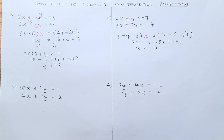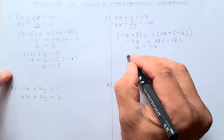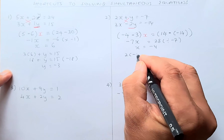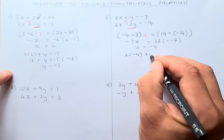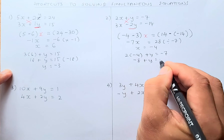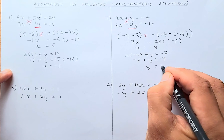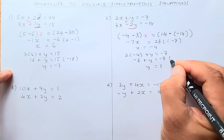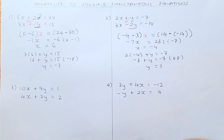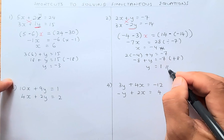And then you're going to solve it: x equals negative 4 because you divide by negative 7 on both sides. Now of course you need to find your y. So substitute in equation 1: 2 times negative 4 plus y equals negative 7. So negative 8 plus y equals negative 7; y equals 1 because you add 8 on both sides. So your x is negative 4 and your y is 1.